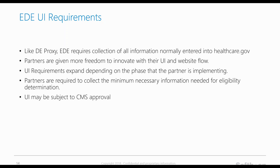Like DE Proxy, enhanced direct enrollment requires collection of all information normally entered into healthcare.gov — including personal information, income information, and information on recent life changes. Partners are given more freedom to innovate with their UI and website flow, however there are still restrictions on certain verbiage, such as verbiage related to American Indian or Alaska Native applicants. UI requirements expand depending on the phase being implemented, and partners are required to collect the minimum necessary information needed for eligibility determination, ensuring certain questions are only asked in certain scenarios or a certain order. The UI is subject to approval by CMS.